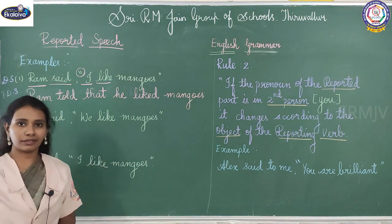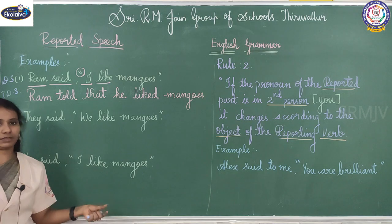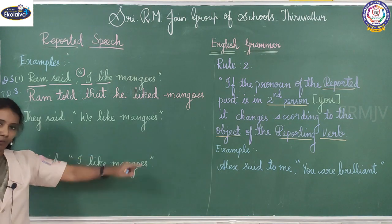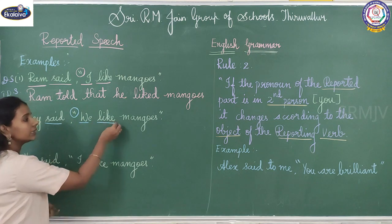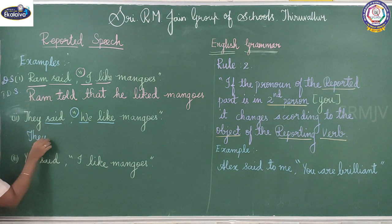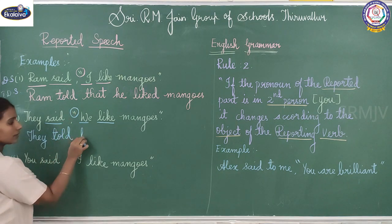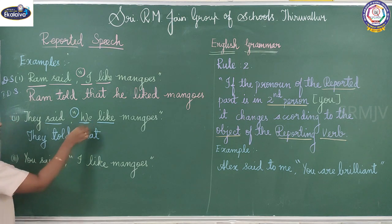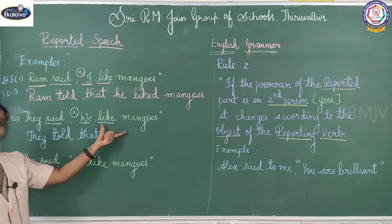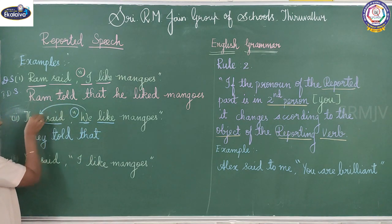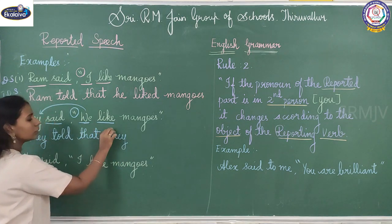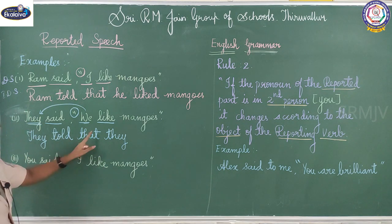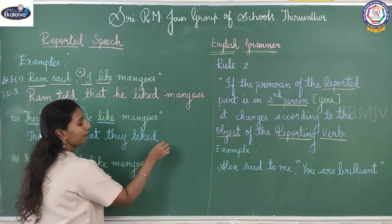The change of tenses we will see in the next session; we are just dealing with pronouns in this session. They said, 'We like mangoes.' The indirect speech is: they told that — 'we' is a first person pronoun occurring in the reported part, so it should change according to the subject of the reporting part. The subject is 'they', so 'we' becomes 'they'. They told that they liked mangoes.